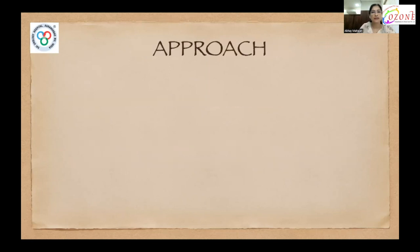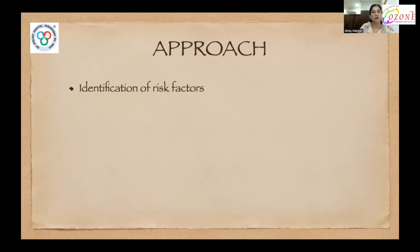What should be the approach of an anesthetist towards such patients? Identification of risk factors and identification of any associated comorbidities like diabetes mellitus, kidney disease, and peripheral vascular disease which may affect post-operative outcome. Also, if there are any signs of cardiac failure, arrhythmias, or heart block, these should be ruled out and managed accordingly.